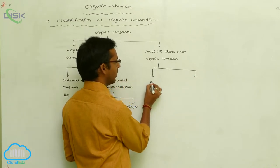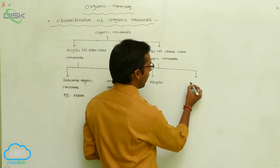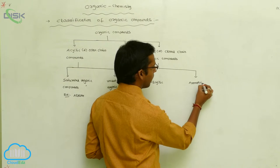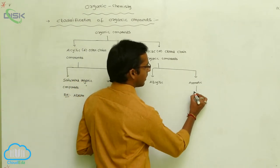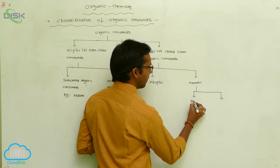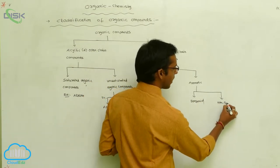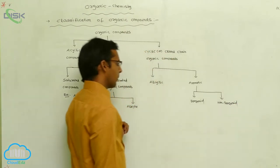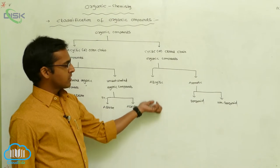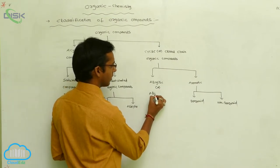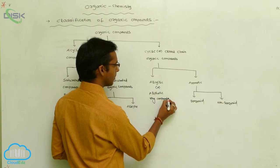Cyclic or closed chain organic compounds are classified into two types: alicyclic organic compounds and aromatic organic compounds. Aromatic organic compounds are further classified into two types: one is benzenoid compounds and the next one is non-benzenoid compounds. Alicyclic compounds contain a cyclic ring with only a normal chain, and are also called aliphatic ring compounds.